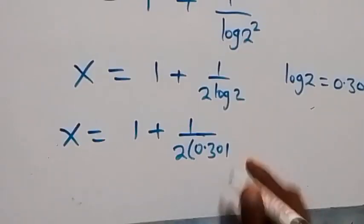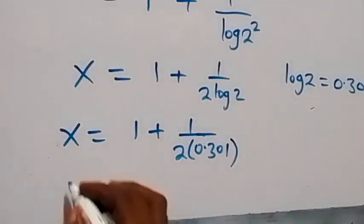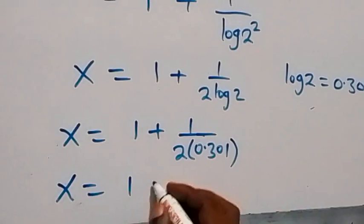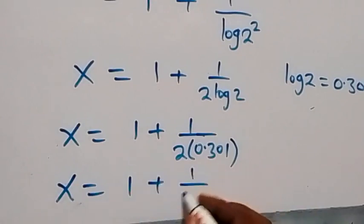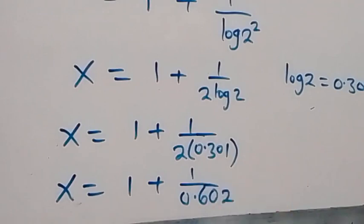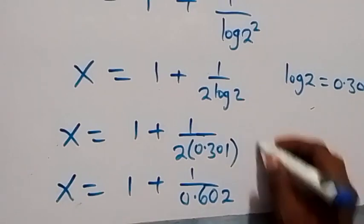When we solve this, we get x equals to 1 plus 1 over 0.602. When we divide 1 by 0.602, we have 1.6611. To two decimal places, that's 1.66.